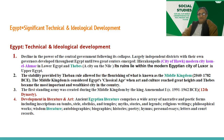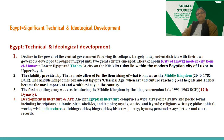Thebes is a city on the Nile river, and it even has a connection with Greece. The first standing army was created during the Middle Kingdom by King Amenemhat I — the 12th dynasty — after the classical age started. In terms of literature and art development, ancient Egyptian literature comprises a wide array of narrative and poetic forms, including inscriptions on tombs, steles, obelisks, and temples; myths, stories, and legends; religious writings; philosophical works; wisdom literature; autobiographies; biographies; poetry; hymns; personal essays; letters; and decor. That was the development in literature and art — very important, you have to go through it.